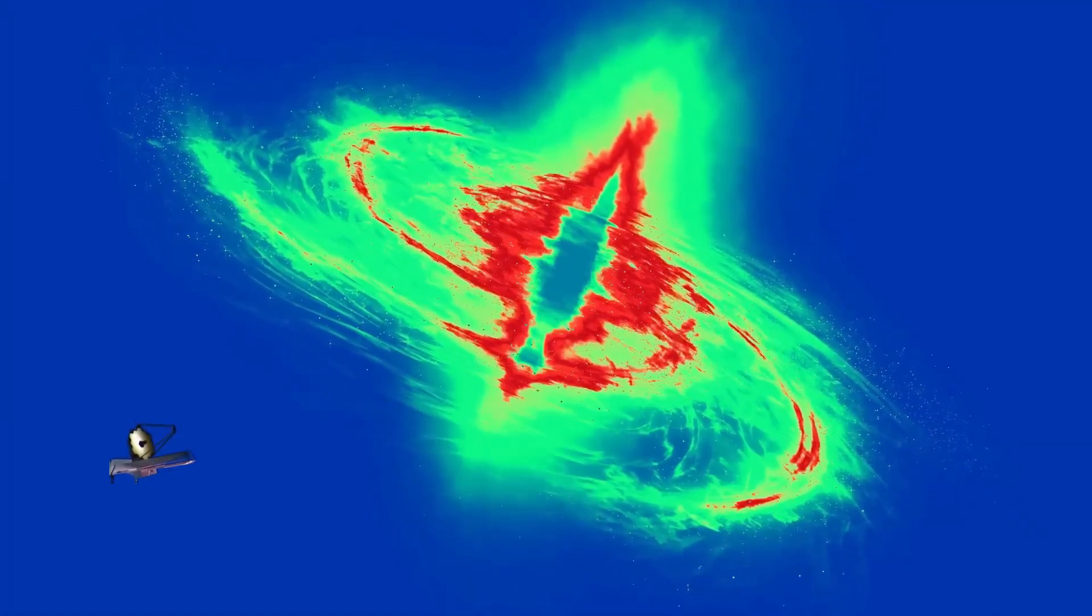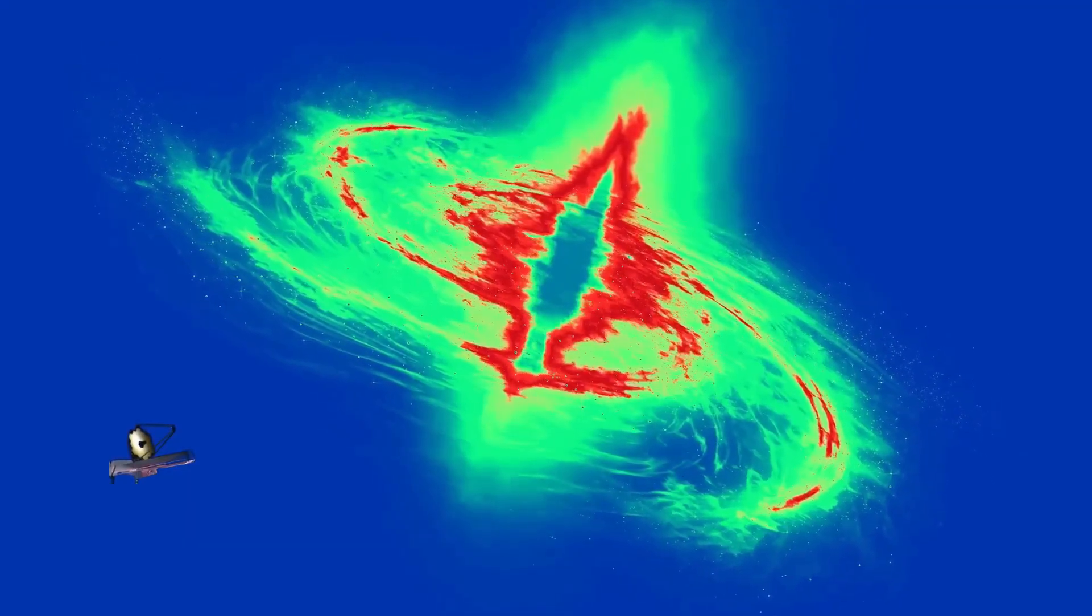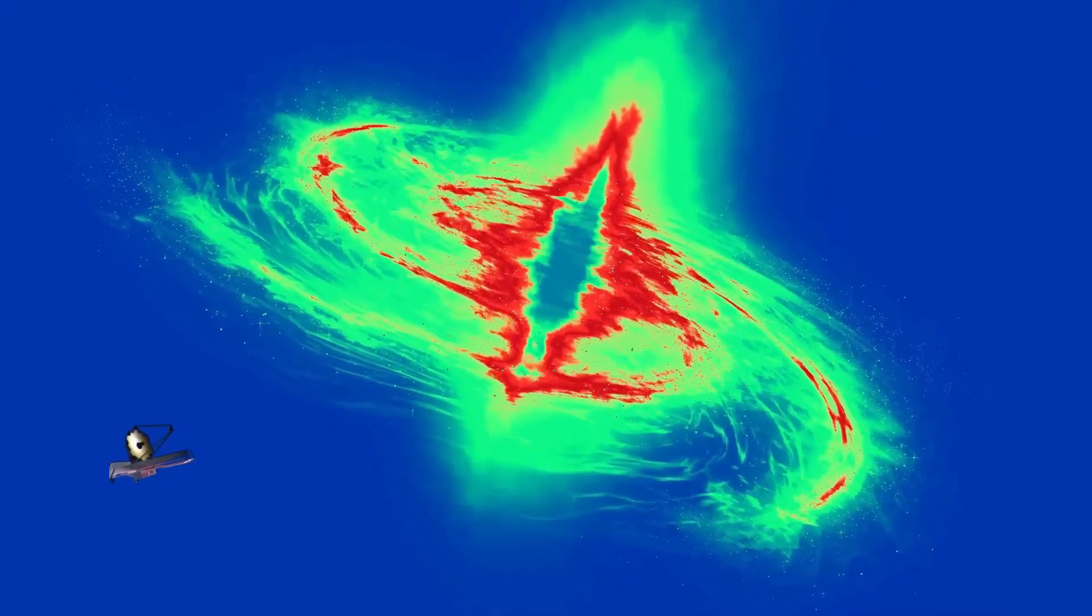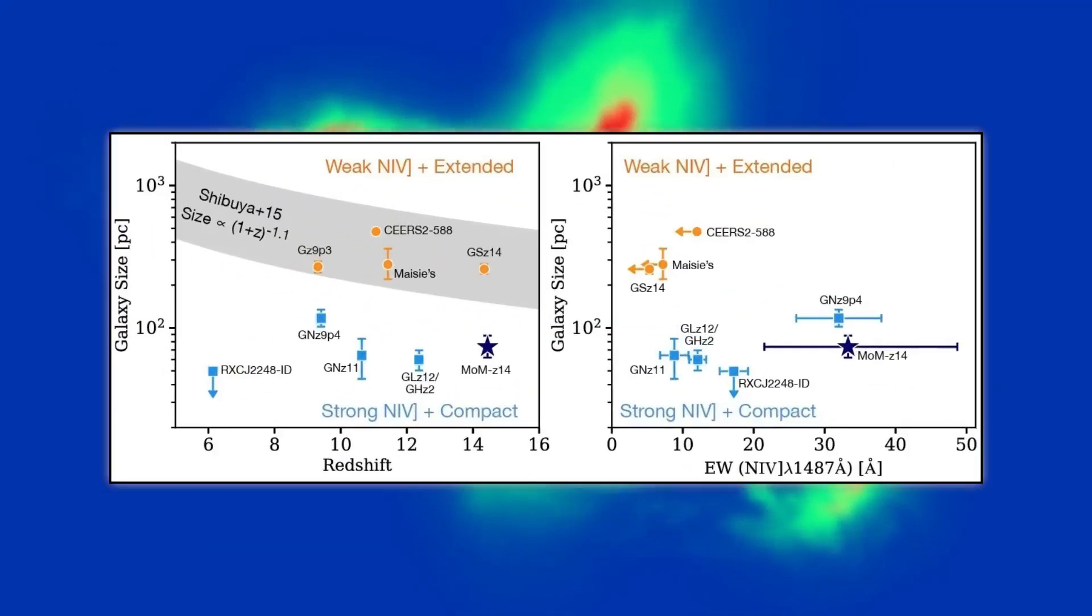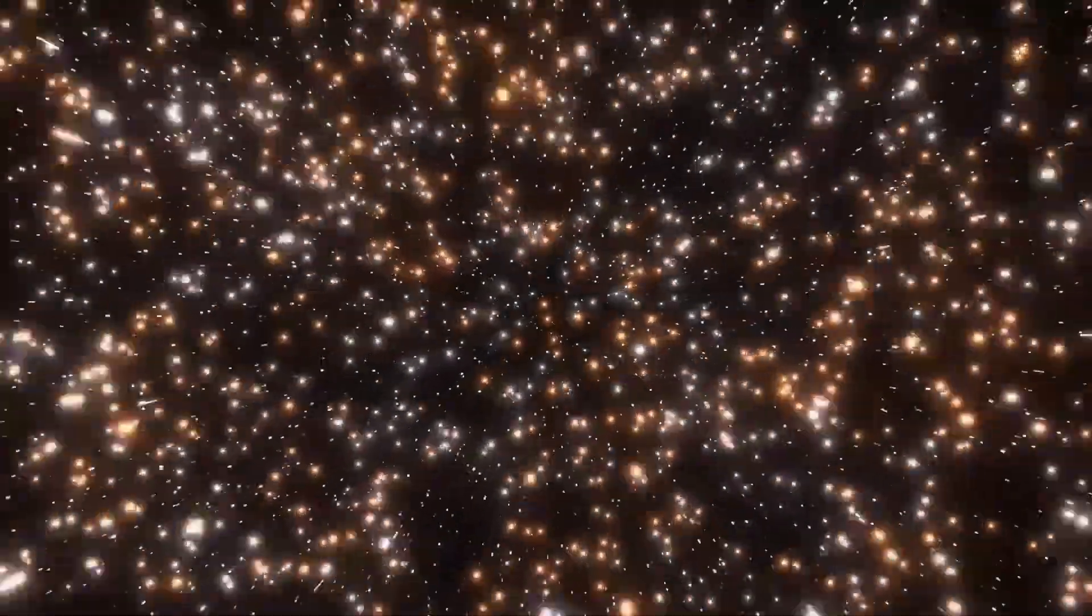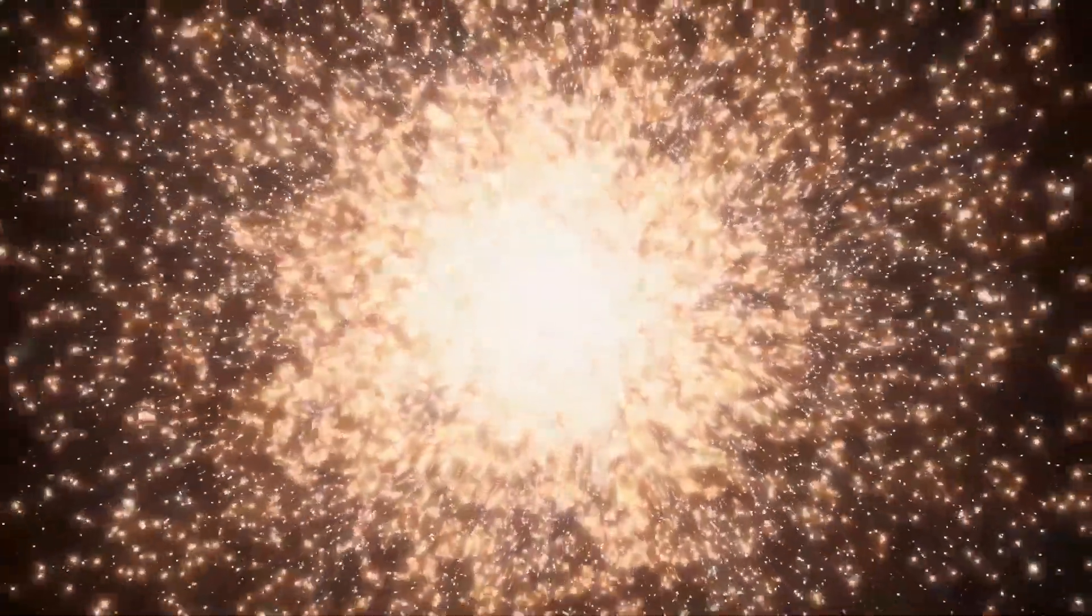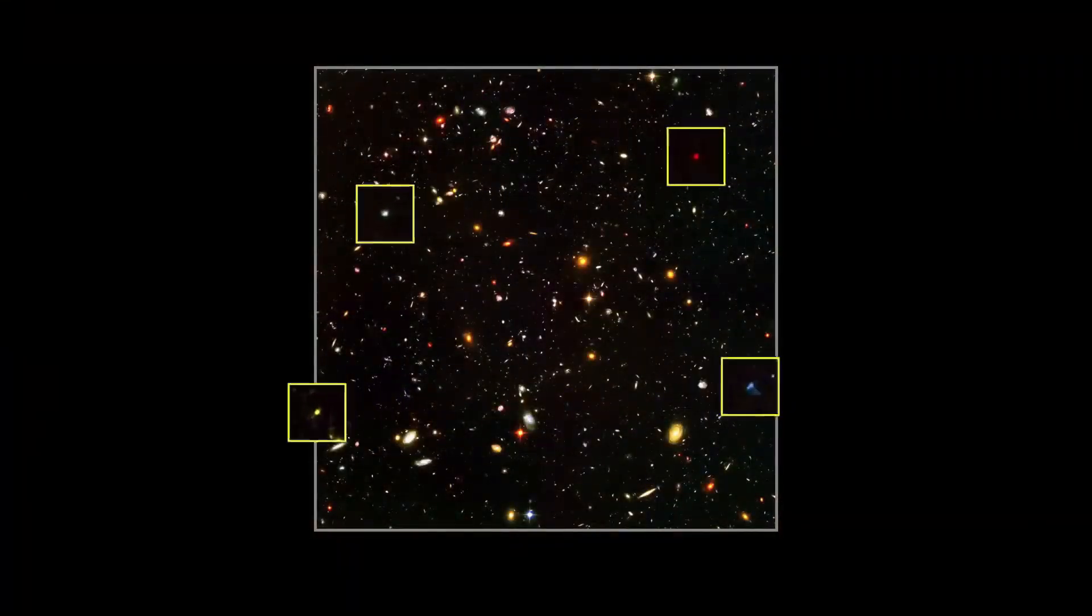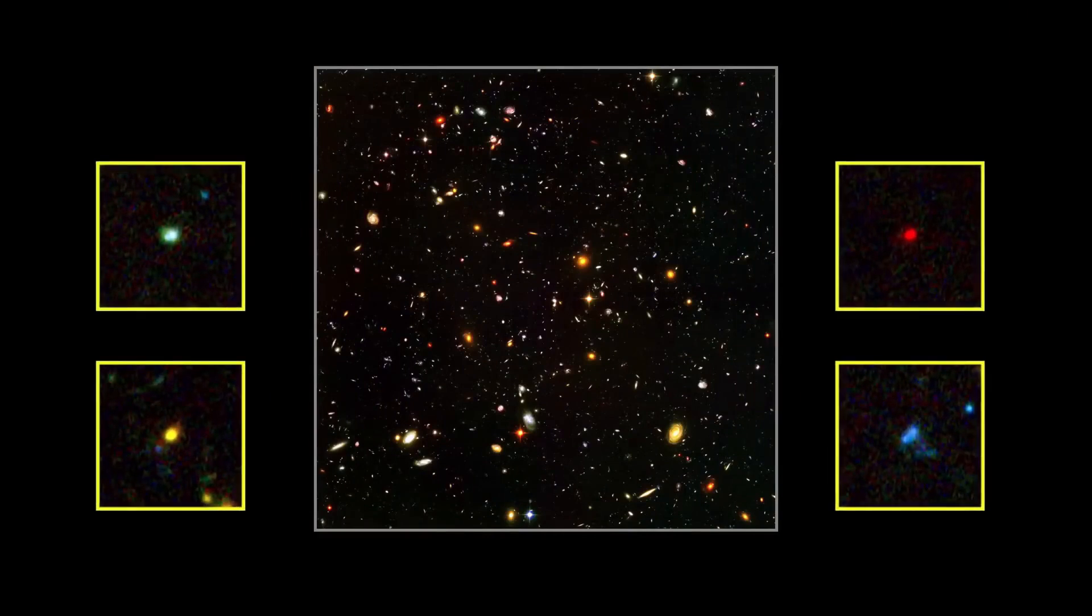To understand this, we need to look at the physics of black holes. When matter collapses under gravity to form a black hole, it creates an event horizon, a boundary beyond which nothing can escape, not even light. Anything that crosses its boundary is forever lost to an outside observer.